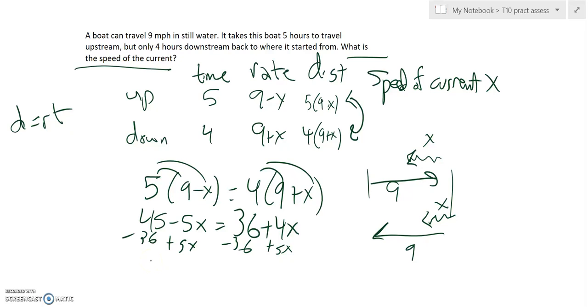So, 45, this gives me a 9X over here. And then if I look over here, 45 minus 36 is 9. Divide by 9. X is 1. So, the speed of the current is 1 mile per hour.